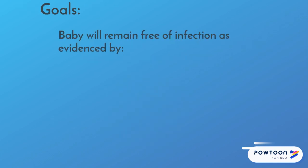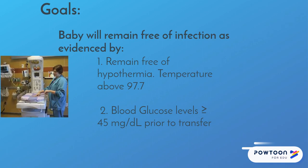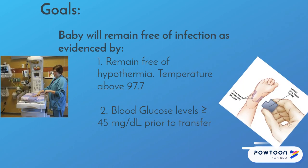The goals for this baby are remaining free of hypothermia and maintaining blood glucose levels greater than or equal to 45, with normal ranges prior to transfer. Most often, babies will show signs of infection through decreased temperature, bradycardia, hypotension, altered respirations, and hypoglycemia.